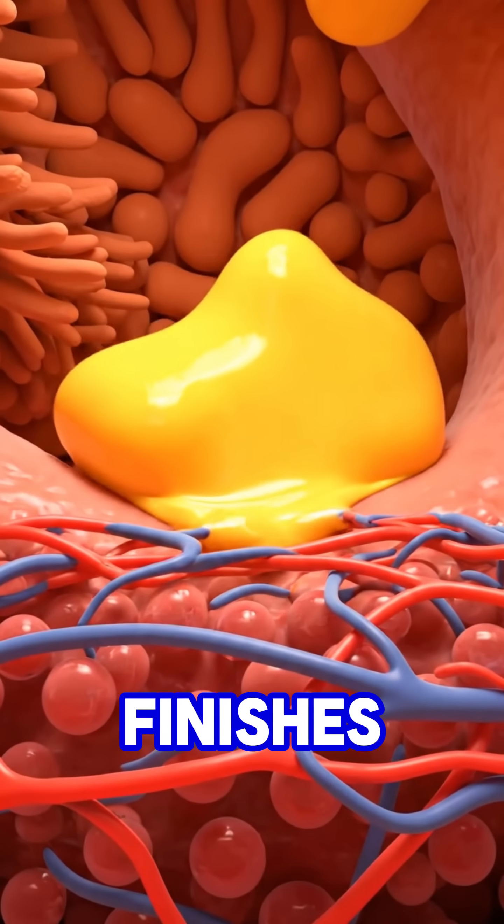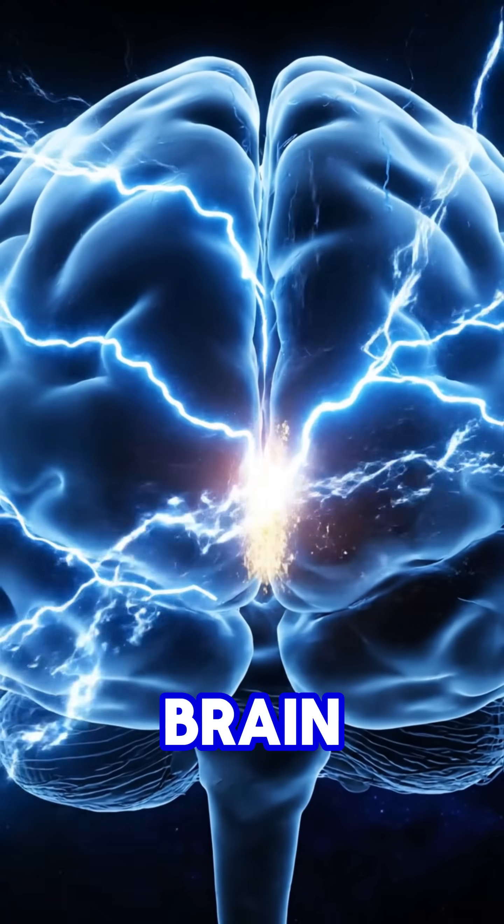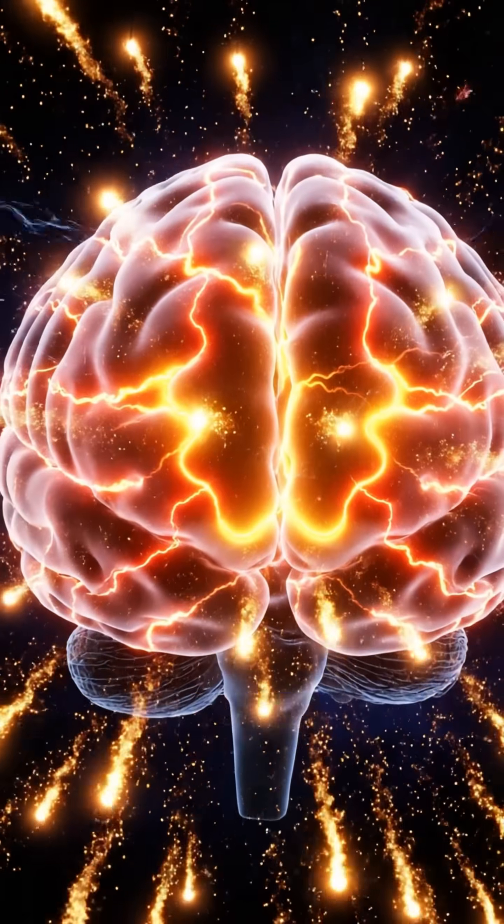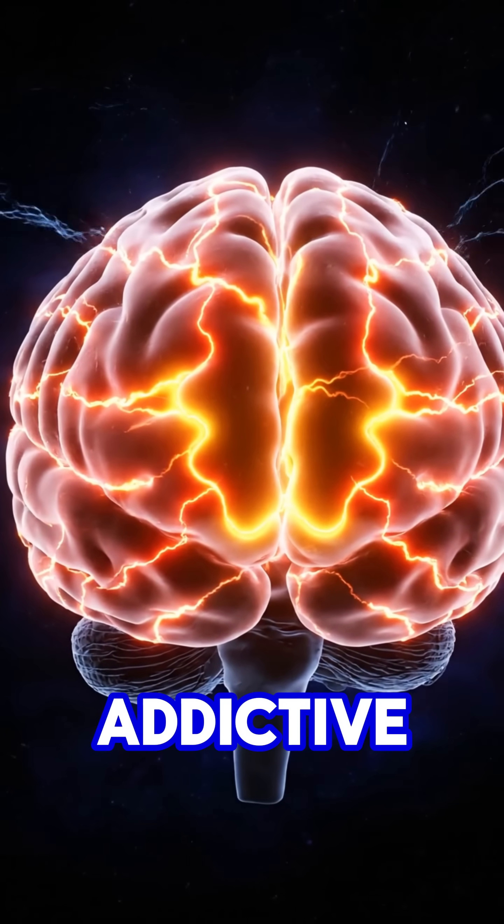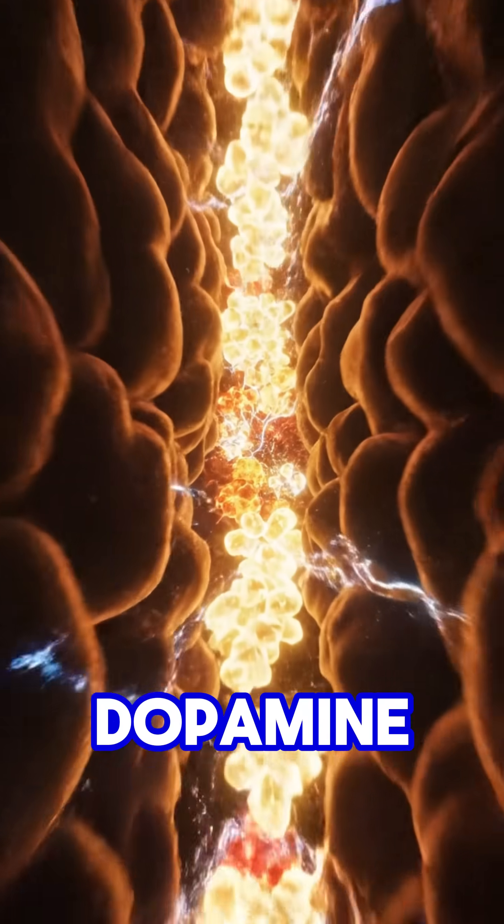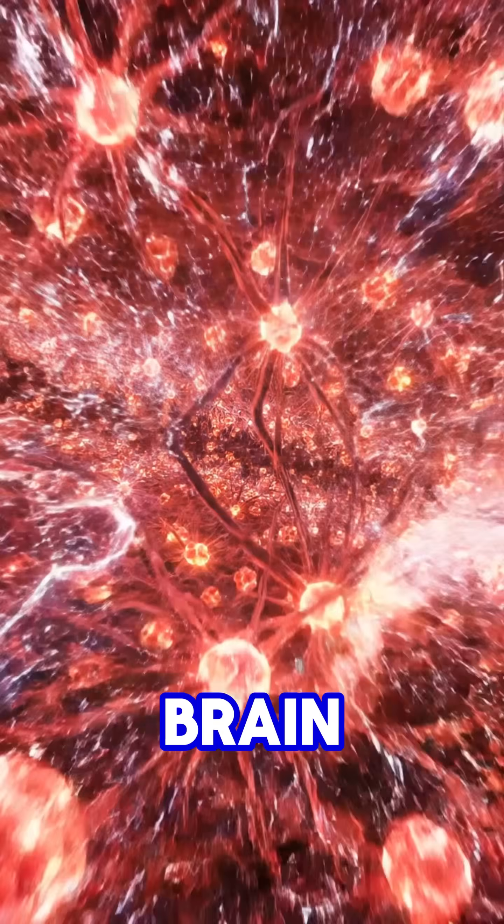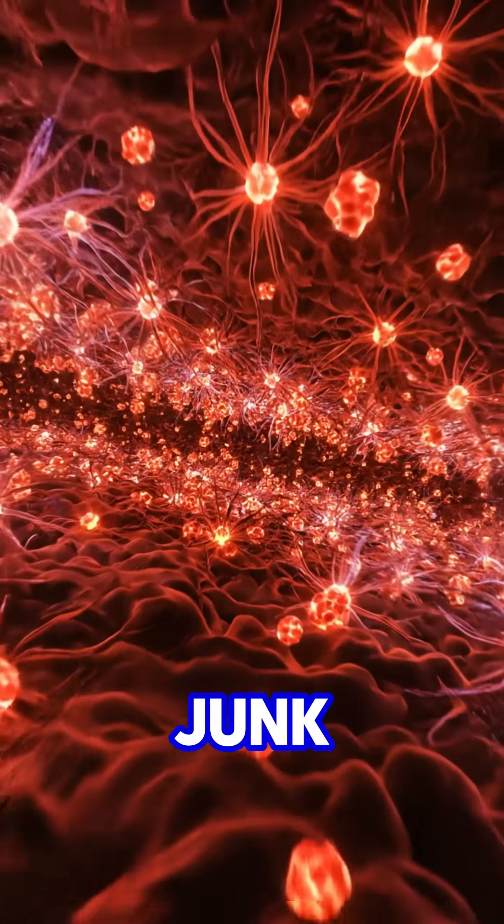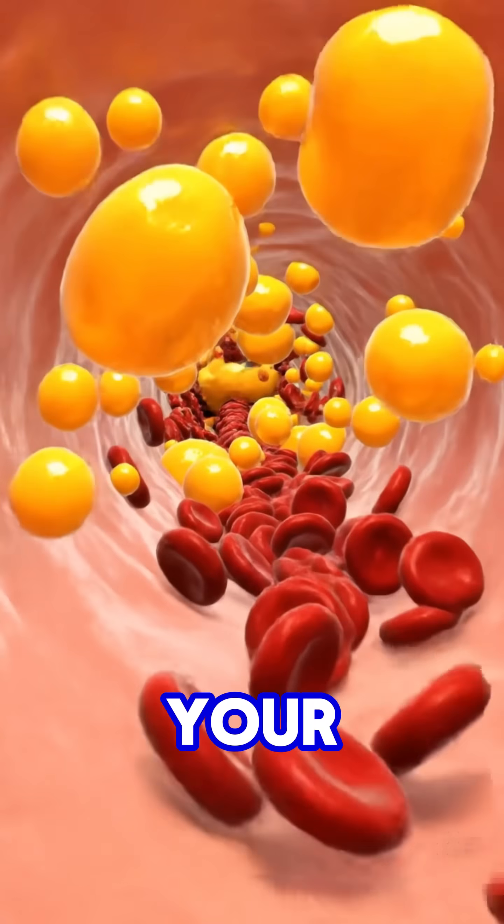Every bite turns into fat before it even finishes digesting. Your brain lights up with dopamine, the same chemical triggered by addictive drugs. But when dopamine floods too much, your brain loses control and wants even more junk. Meanwhile, your blood gets thicker.